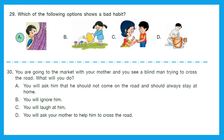Question 30: You are going to the market with your mother and you see a blind man trying to cross the road. What will you do? A — tell him he should not come on the road. No. B — ignore him. No. C — laugh at him. Not at all. D — ask your mother to help him cross the road. This looks to be the perfect answer. Option D is the right answer.